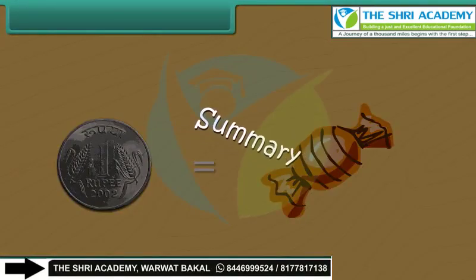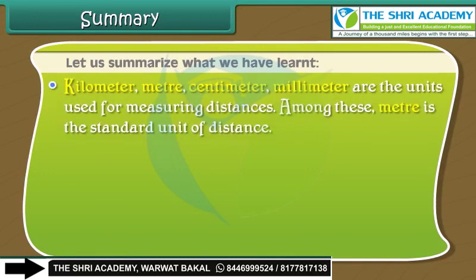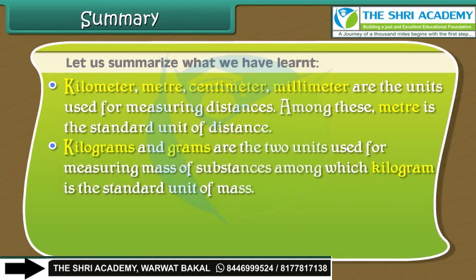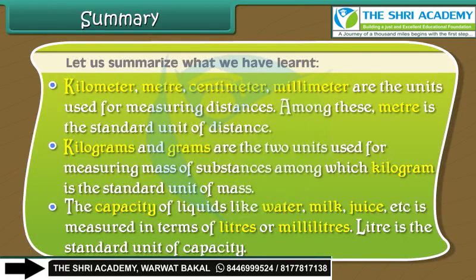Let us summarize what we have learned. Kilometer, meter, centimeter, and millimeter are the units used for measuring distances, and meter is the standard unit. Kilograms and grams are the units for measuring mass, and kilogram is the standard unit. The capacity of liquids like water, milk, juice, etc. is measured in liters or milliliters, and liter is the standard unit of capacity.